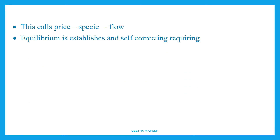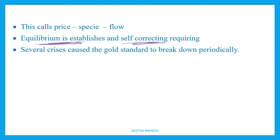So the system corrects itself — no need for government intervention. Equilibrium is re-established automatically. The gold standard is self-correcting.